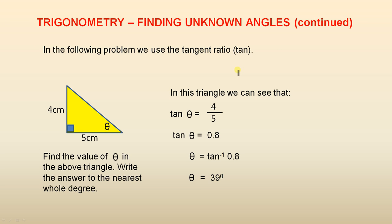And the final little problem here is finding theta again. This time we've been given the opposite and the adjacent. So that's why we use the tangent ratio which is tan. We're finding the angle to the nearest whole degree.